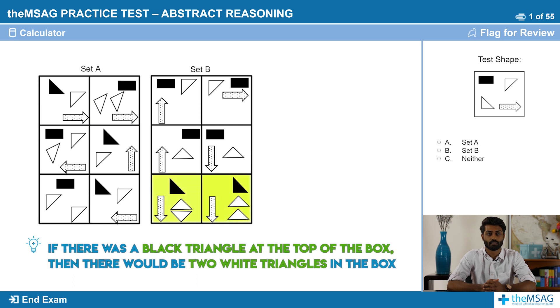For set B, if there was a black triangle at the top of the box then there would be two white triangles in the box. If there was a black rectangle at the top of the box, then there would be one white triangle in the box.